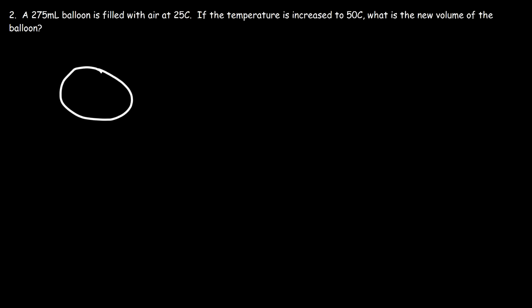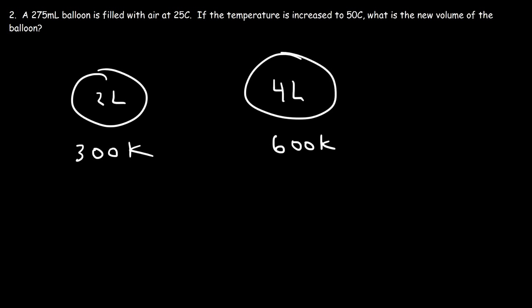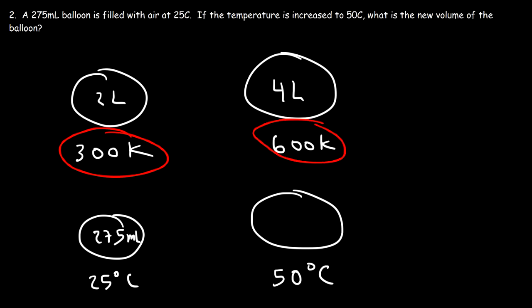Recall our earlier example: a balloon at 300 Kelvin was 2 liters, and when we doubled the temperature to 600 Kelvin the volume doubled to 4 liters. So if we increase the temperature to 50 degrees Celsius, you might think the volume doubles to 550 milliliters — but that is not correct. The volume is proportional to the Kelvin temperature, not the Celsius temperature. If you double the Kelvin temperature the volume will double; however, if you double the Celsius temperature the volume will increase but will not double.